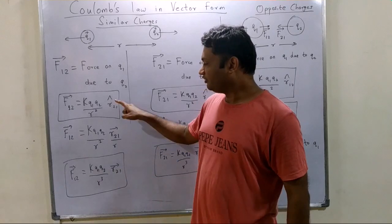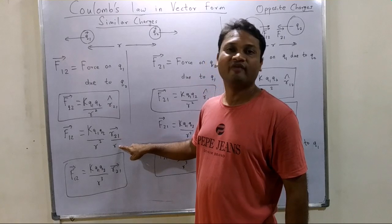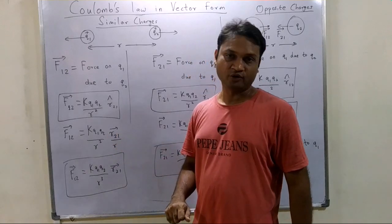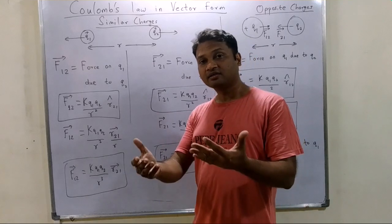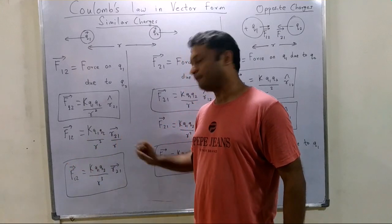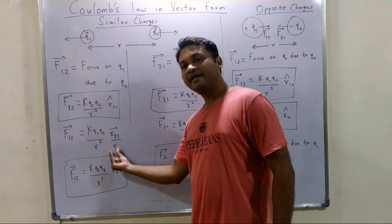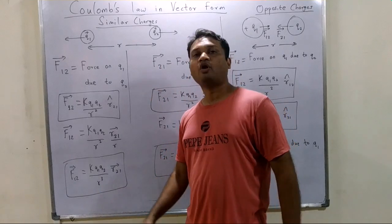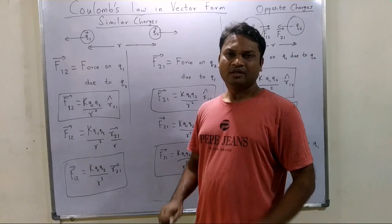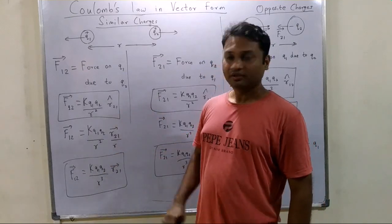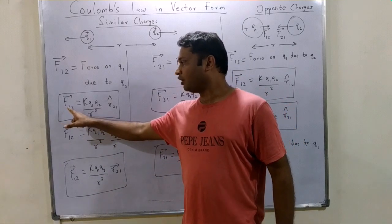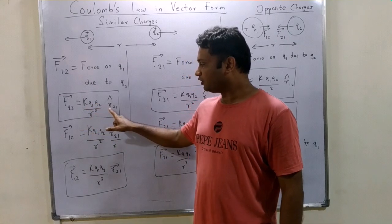Hence, the force on q1 due to q2 is: F₁₂ = k·q1·q2 / r² × r̂₂₁. The unit vector r̂₂₁ can also be written as the vector r₂₁ divided by its magnitude r. We will prefer the unit vector notation, so Coulomb's law in vector form is: F₁₂ = k·q1·q2 / r² × r̂₂₁.